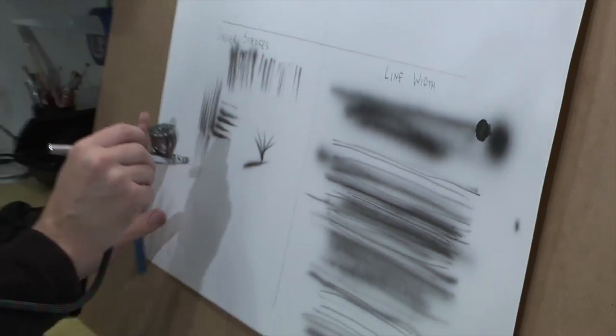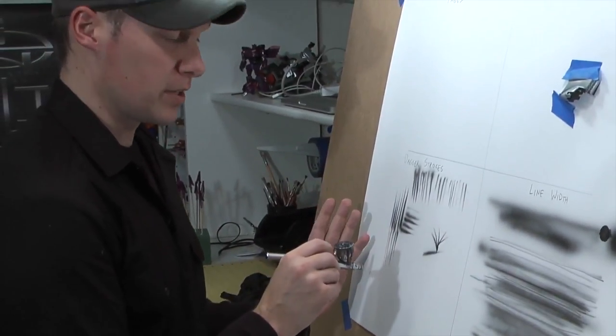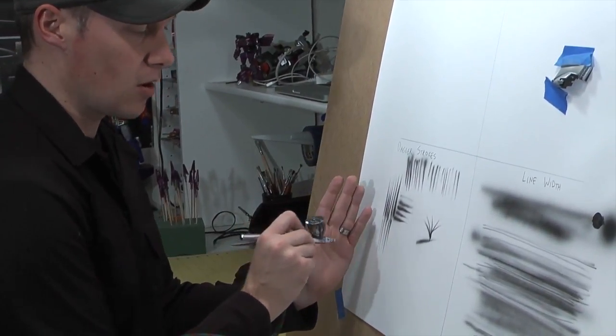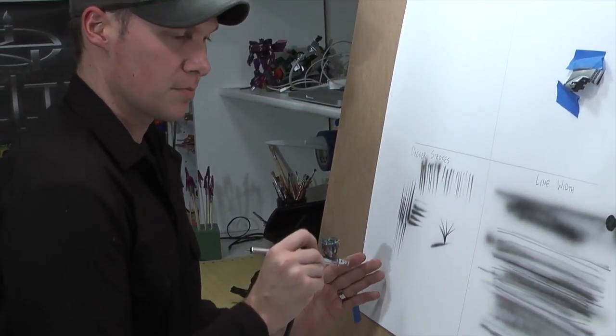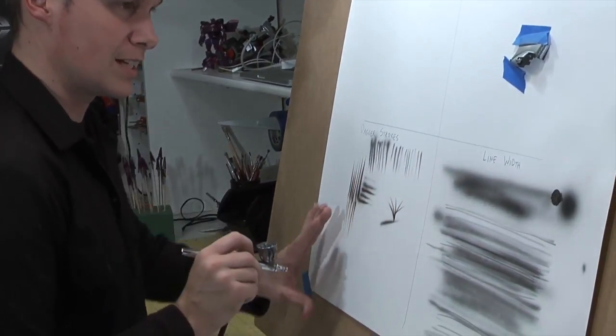We've already discussed line width. What we're doing here is you're learning how to control both line widths—you're learning to take that from large to thin or from thin to large. As you can see, it all goes hand in hand.